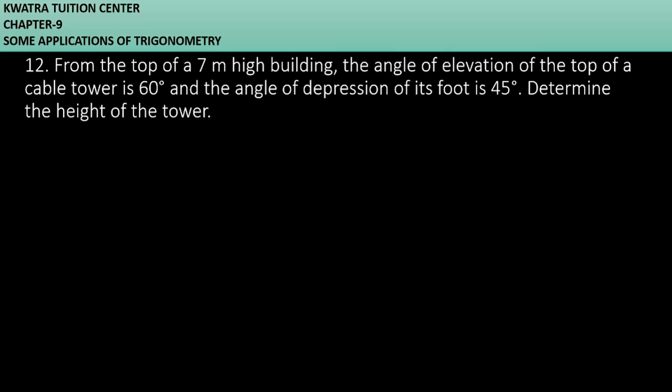From the top of a 7 meter high building, the angle of elevation of the top of a cable tower is 60 degrees and the angle of depression of its foot is 45 degrees. Determine the height of the tower.